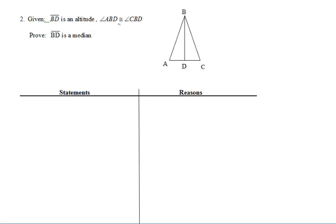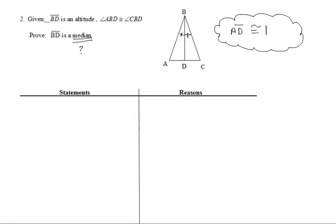Moving on to example two, we're given some information. Let's read over it and mark our diagram accordingly. I'm going to put tick marks on the two congruent angles: angles ABD and CBD. We're told that BD is an altitude. Let's look at what we want to prove — we want to prove that BD is a median. Think back to the first part of the notes. If BD were a median, we work backwards: the two smaller segments AD and DC at the bottom of the triangle must be congruent. So if we can get those two segments congruent, we can say that BD is a median.